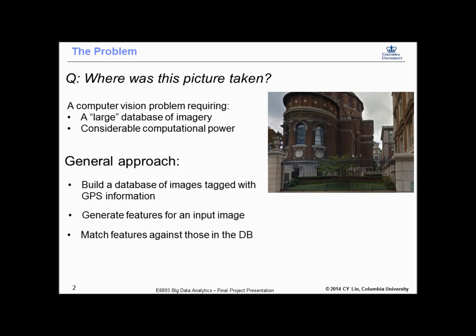In this project we explore the problem of image localization. The basic task is to take an image with absolutely no metadata and estimate where it was taken. We do this by taking a database of images tagged with location data and using image matching and similarity detection algorithms to find pictures in that database that match it closely.